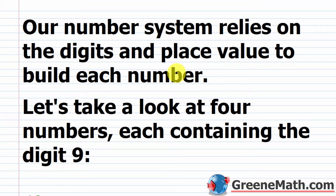It doesn't matter how large or small a number is — you're only going to use the digits to build it. The key is that as you change the position or placement of a digit in a number, its value is going to change. That's why we call our number system a place value system. To show this, let's take a look at four numbers, each containing the digit nine.